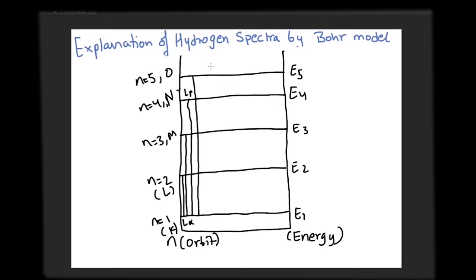The Balmer lines mostly correspond to the visible spectrum where a transition from n equals 3 to n equals 2 releases a radiation of wavelength 656.3 nm in the red area